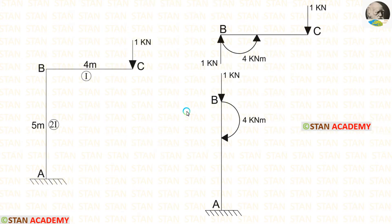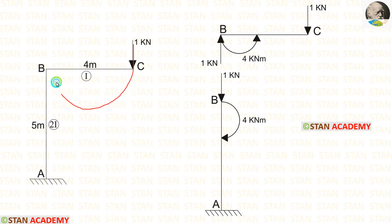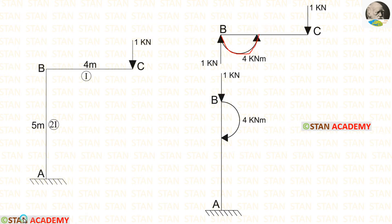Before making the sections, let us make the free body diagram. At point C, we are having a point load of 1 kN. Because of this point load, an anticlockwise moment will be developed at point B. This point load acts towards point B in the clockwise direction, so a moment will be created in the anticlockwise direction. The magnitude of the moment will be 1 into 4, so it will be 4 kN·m.